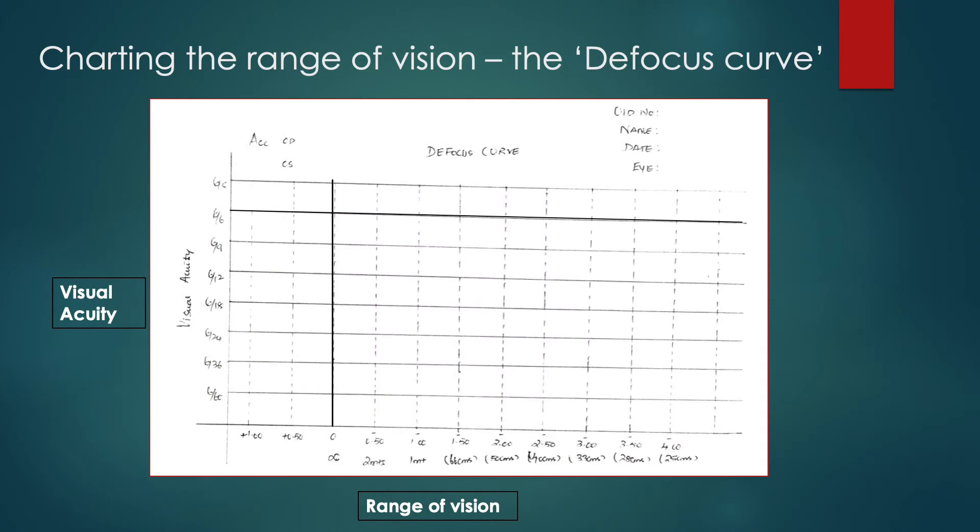In order to plot the curve, we first draw up a template in which the vertical axis displays the visual acuity from 6 by 6 at the top to about 6/60 at the bottom. The horizontal axis plots the negative spherical add gradually from plus 1 to plus 0.5 to no add to minus 0.5, minus 1 diopter and so on so forth till we reach minus 4 diopters. This add is done in 0.5 diopter steps.